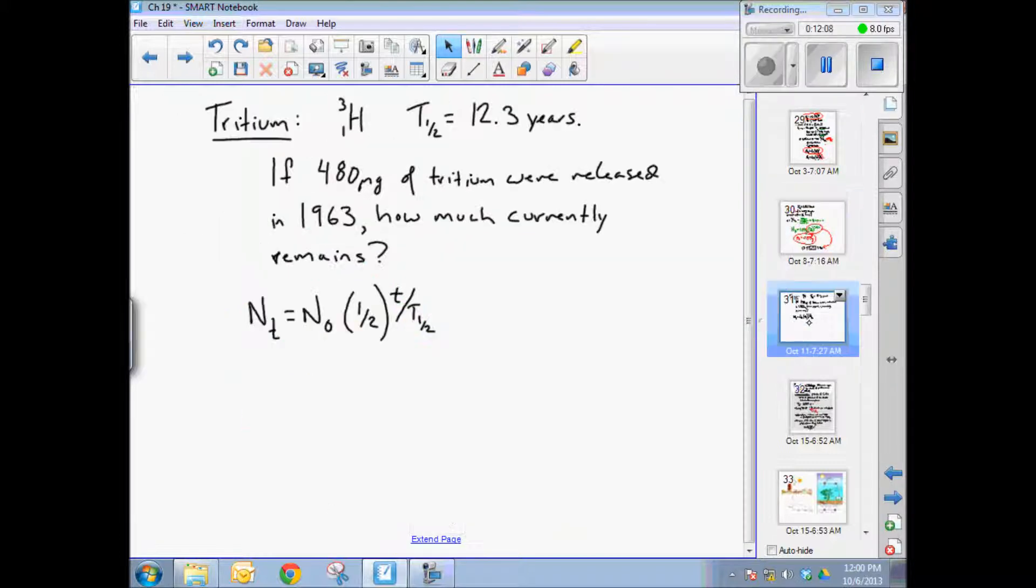So let's do another one just so you can be a little more familiar with this problem. Tritium, a radioactive isotope of hydrogen. I think we discussed this, only produced artificially in atomic bomb blasts, not produced in nature. So let's say the last atmospheric bomb test was in 1963 and 480 milligrams of tritium were released. How much of that 480 milligrams currently remains if the half life is 12.3 years. So we need to figure out how many half lives we've gone through.